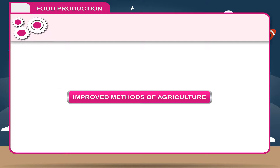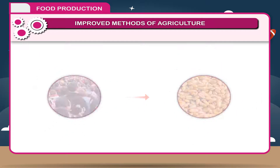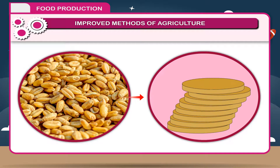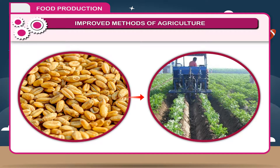Improved methods of agriculture. With the increase of population, our requirement of food grains has also increased manifold. This increased demand of food grains can only be fulfilled by the utilization of improved methods of agricultural practices.